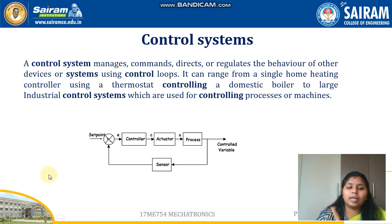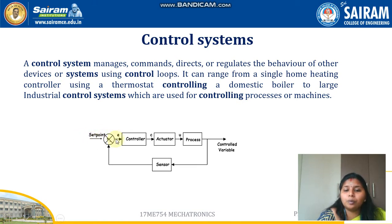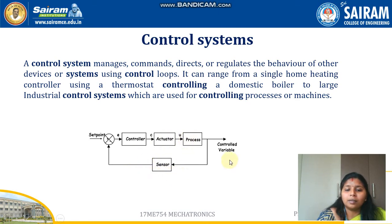This is a simple diagram of a control unit where there is a set point — that is where the input is obtained. There is a control unit along with the actuator, and the process takes place. There is a sensor and after the process is completed, the controlled output is given.